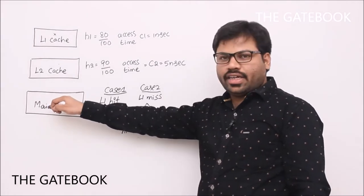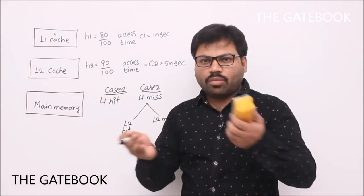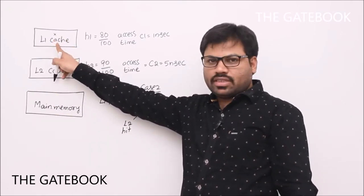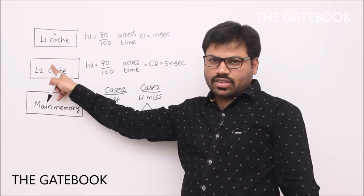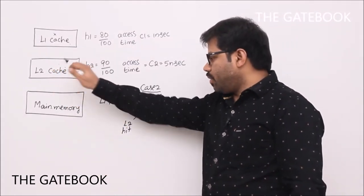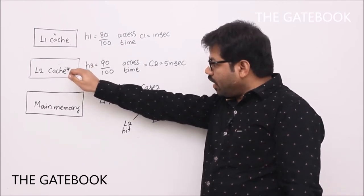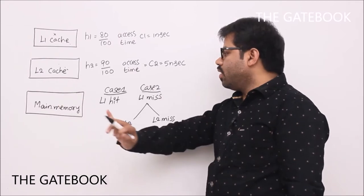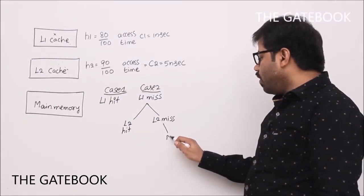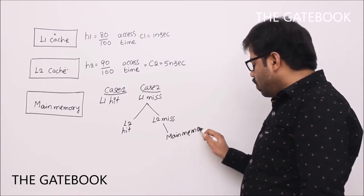You have two options only for L1 and L2: L1 hits or L1 misses; L2 hits or L2 misses. If L1 hits, we don't go to L2. If L1 misses, we come to L2. If L2 hits, we don't go to main memory. If L2 also misses, then we go to main memory.